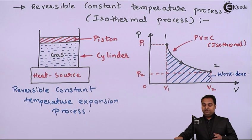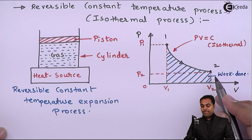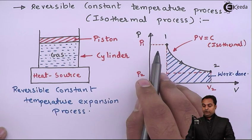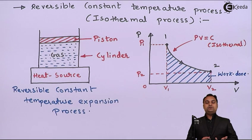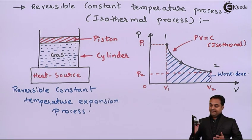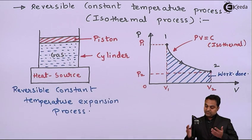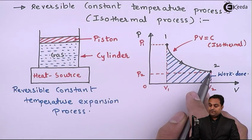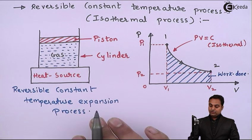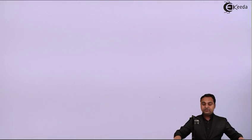For a compression process, we would start from point 2 and move to point 1, with the direction of the arrow reversed, because in compression volume decreases with increasing pressure. In expansion, volume increases with decreasing pressure. This is the isothermal process on the PV diagram.